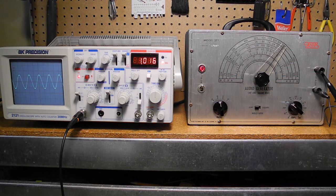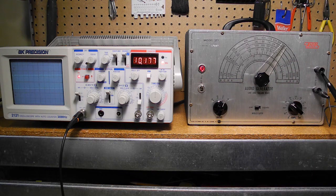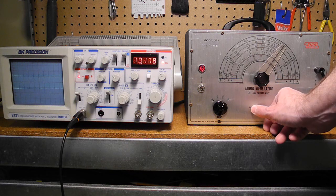If we change to band C, we can now see a 10 kHz signal. Now let's change to square wave output.